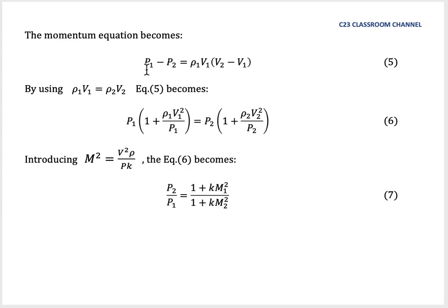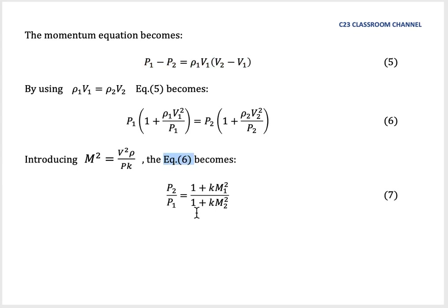The momentum equation becomes P₁ − P₂ = ρ₁V₁(V₂ − V₁). Using ρ₁V₁ = ρ₂V₂, equation 5 becomes: P₁(1 + ρ₁V₁²/P₁) = P₂(1 + ρ₂V₂²/P₂). Since Mach number squared can be written as V²ρ/(PK), substituting into equation 6 gives us equation 7: P₂/P₁ = (1 + KM₁²)/(1 + KM₂²).